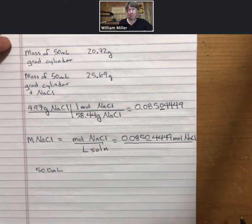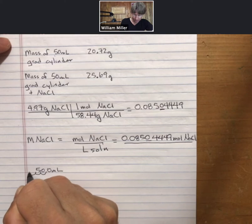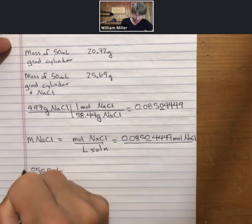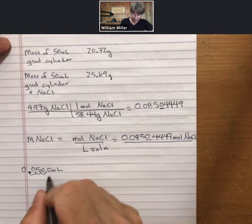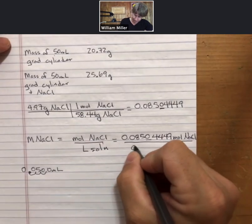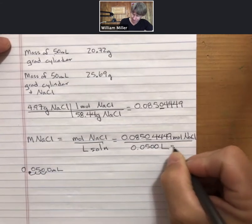Converting that to liters, since there is one liter equal to 1000 milliliters, that is equivalent to a conversion that moves the decimal point three places to the left to turn it into liters. So I end up with 0.0500 liters of solution.